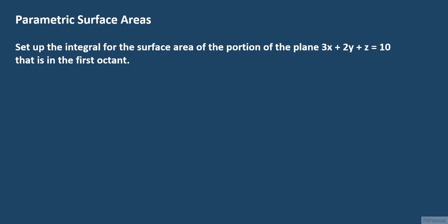In this lecture, we set up the double integral for the surface area of the portion in the first octant of the plane 3x plus 2y plus z equals 10. The purpose of this exercise is not to find the exact area of the surface, but to show how to set up double integrals for the area of a surface. We will set up the double integral in different ways: first integrating with respect to x and y, then with respect to x and z, and finally with respect to y and z.